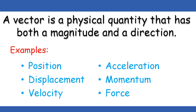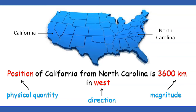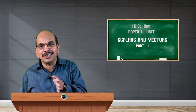Now let us have a lively example. Suppose you think of the position of California from North Carolina — it is nearly 3600 kilometers in magnitude and it is towards west. So here the physical quantity is position, west is the direction, 3600 kilometers is the magnitude, and kilometer is the unit.